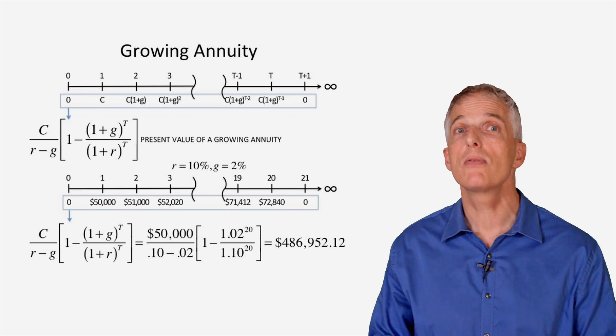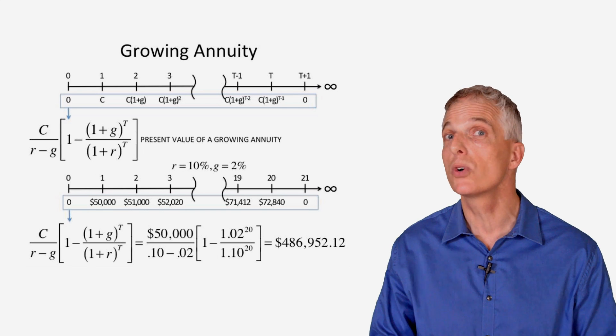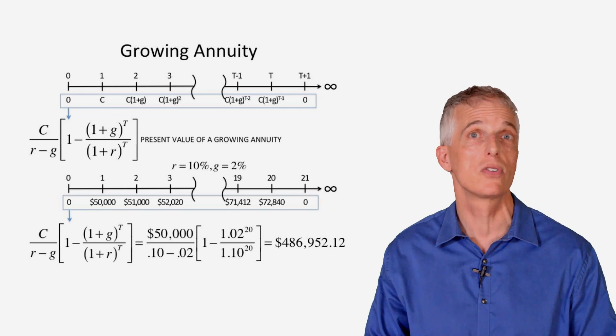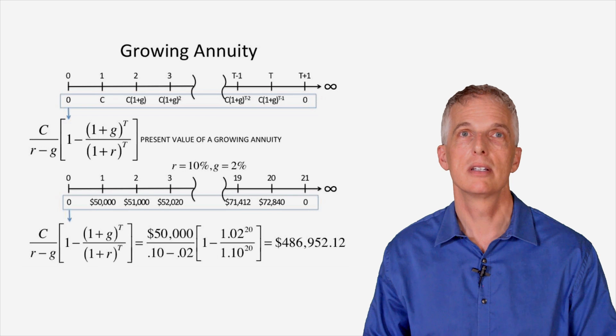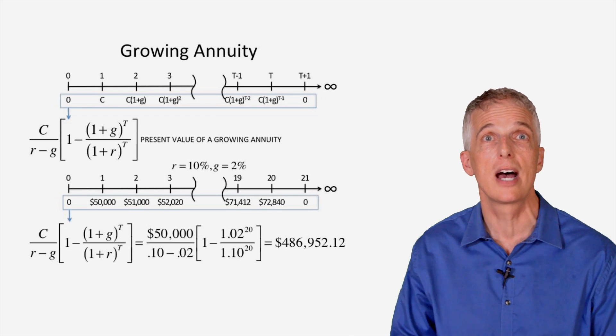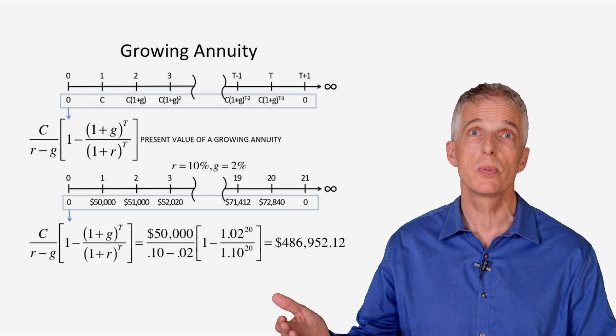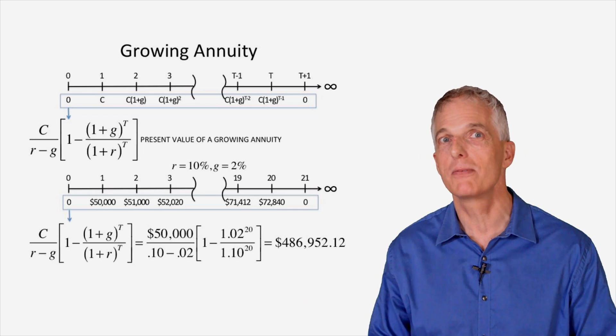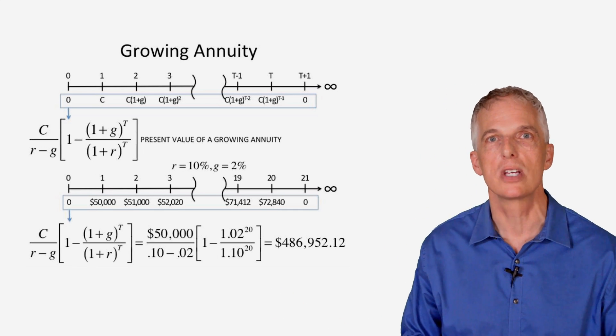Applying the growing annuity formula yields a valuation of $486,952 for the promised payments. Of course, it makes sense that an annuity that begins with a cash payment of $50,000 and then grows at 2% will be more valuable than a fixed annuity of $50,000 over the same number of years.